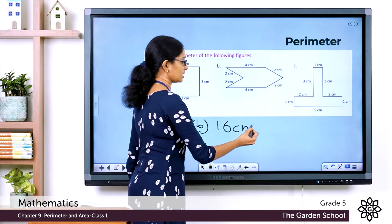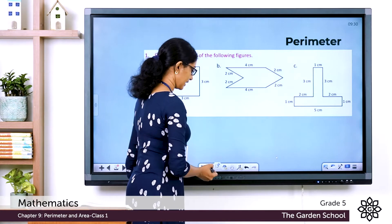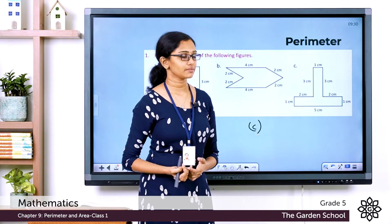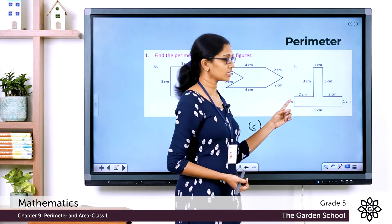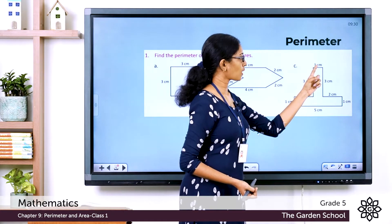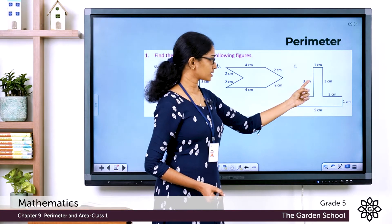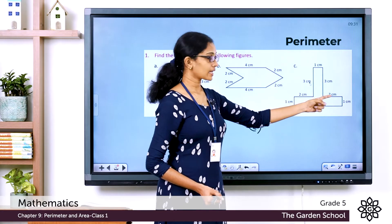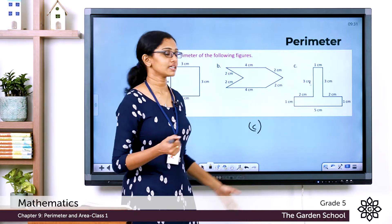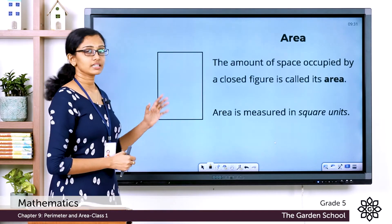So for Question B, the perimeter is equal to 16 centimeters. For Question C, we also have a figure with straight sides. Adding all sides: 1 + 2 + 3 + 1 + 3 + 2 + 1 + 5 = 18 centimeters. So the perimeter of this figure is equal to 18 centimeters.